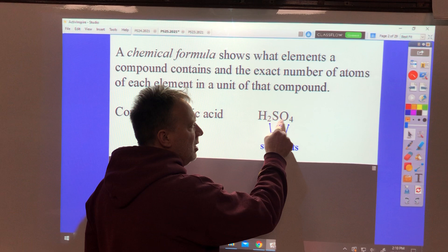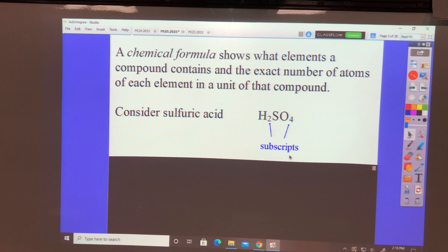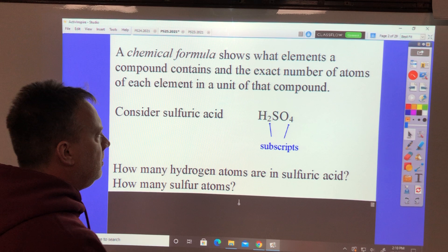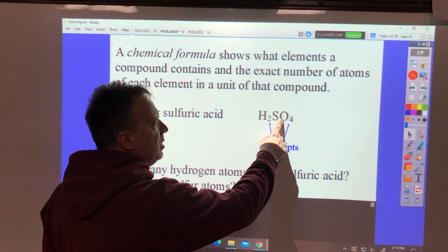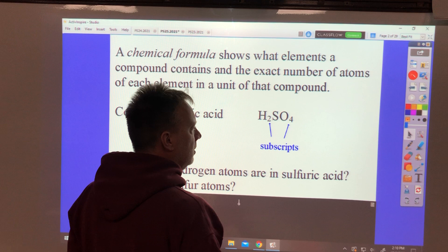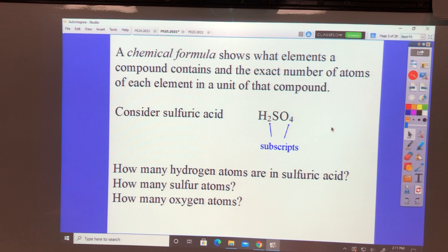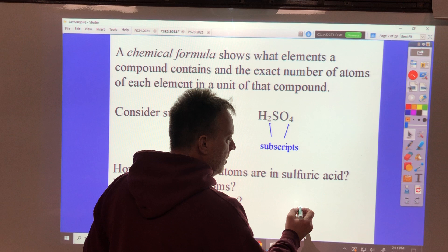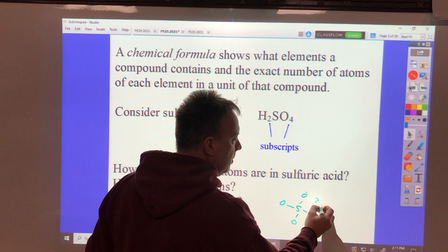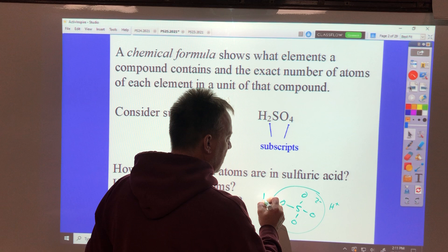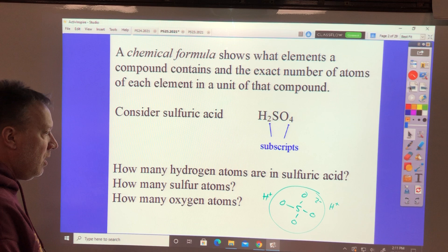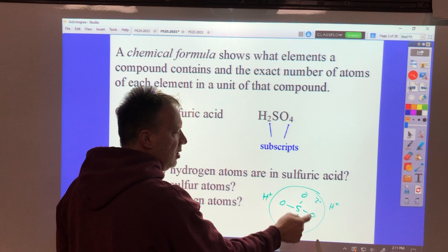This chemical formula, these numbers are called subscripts. Sub as in submarine, as in below. Script as in writing. So these numbers are written below. They count atoms or polyatomic ions. How many hydrogen atoms are in sulfuric acid? Two. How many sulfur atoms? There's not a number, that number is one, and there are four oxygen atoms. It actually looks something like this: two minus charge, and around it somewhere a hydrogen and a hydrogen. Two hydrogen atoms, one sulfur atom, and four oxygen atoms.